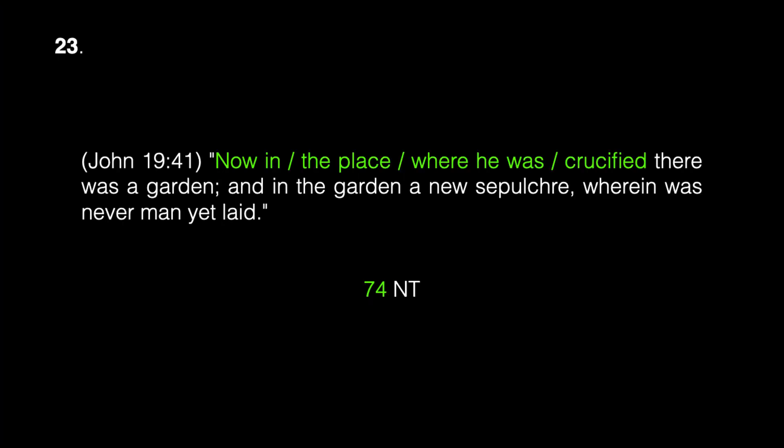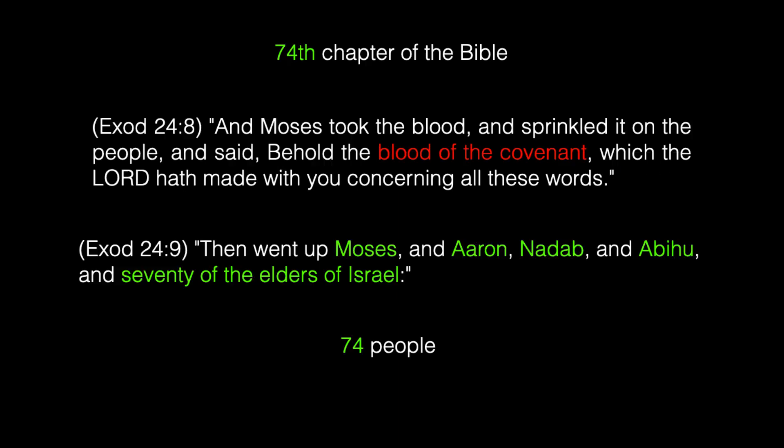Let's go to the twenty-third and final occurrence of crucified in the four gospels — John 19:41: 'Now in the place where he was crucified there was a garden, and in the garden a new sepulcher wherein was never man yet laid.' The phrase 'now in,' the phrase 'the place,' the phrase 'where he was,' and the word 'crucified' combined appear in 74 verses of the New Testament.